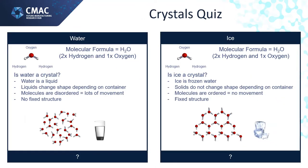Do you think you can tell me what a crystal is? Here we have water and ice. Both have the same molecular structure, which consists of two hydrogen atoms and one oxygen atom, but one is a crystal and the other is not. Water is a liquid, and liquids change their shape depending on the container, as they don't have a fixed structure — in water, the molecules are disordered and can move a lot. Whereas ice is a solid; solids do not change shape depending on the container and have a fixed structure — in ice the molecules are ordered and do not move.